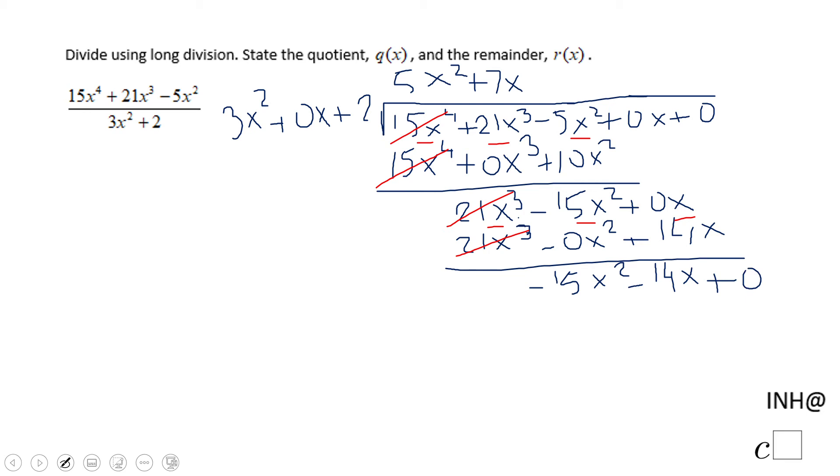What should I multiply 3x squared to get 15x squared? And that will be 5. 5 times 3x. Negative 5, in fact.